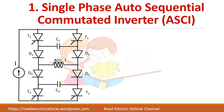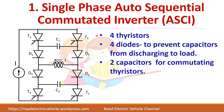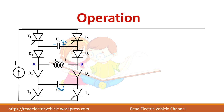Let us see about the single phase autosequential commutated current source inverter. This consists of four thyristors, four diodes, and two capacitors. The diodes are used to prevent the discharging of the capacitor into the load directly. Let us see the operation of this inverter.